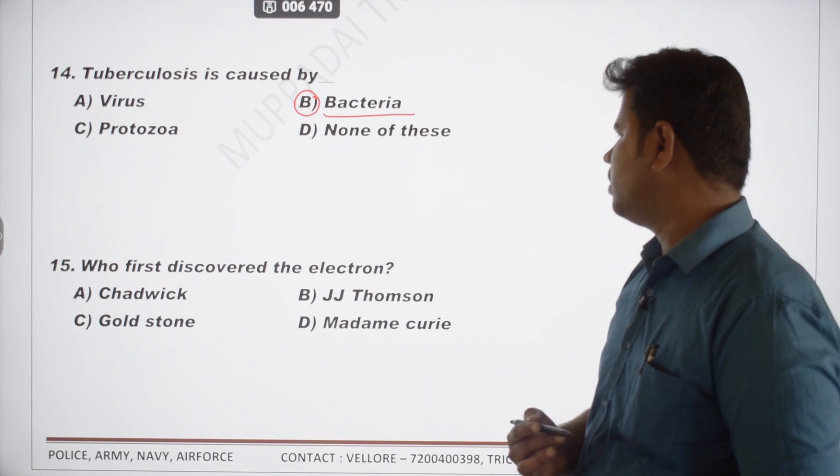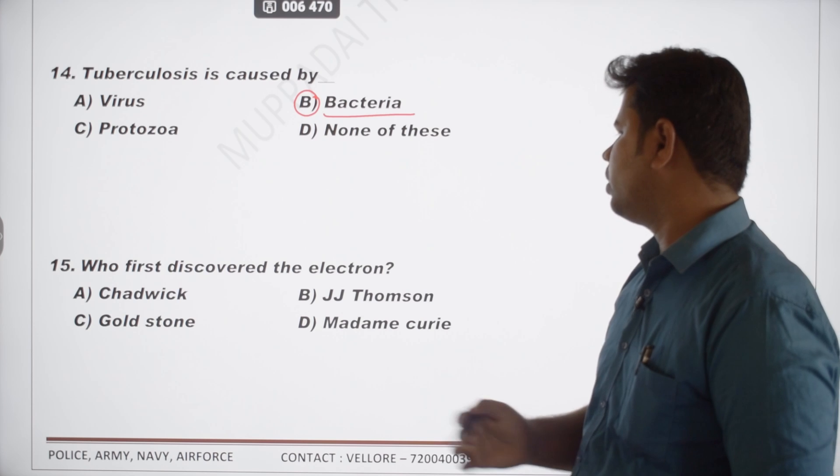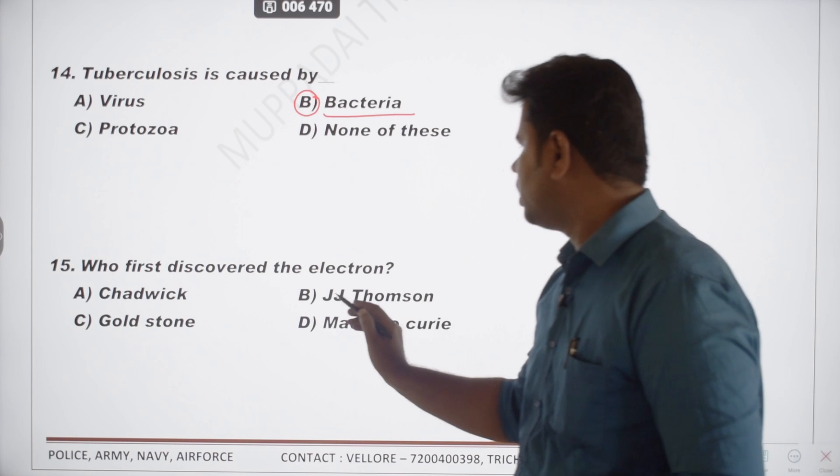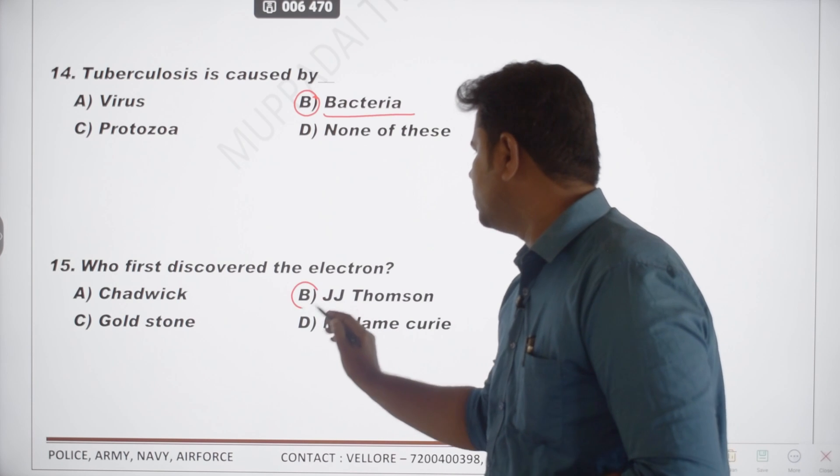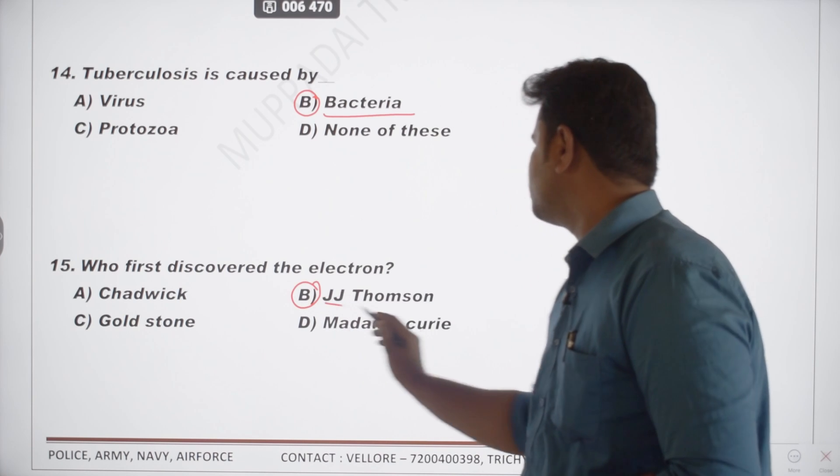The 15th question: who first discovered the electron? The electron was first discovered by J.J. Thomson.